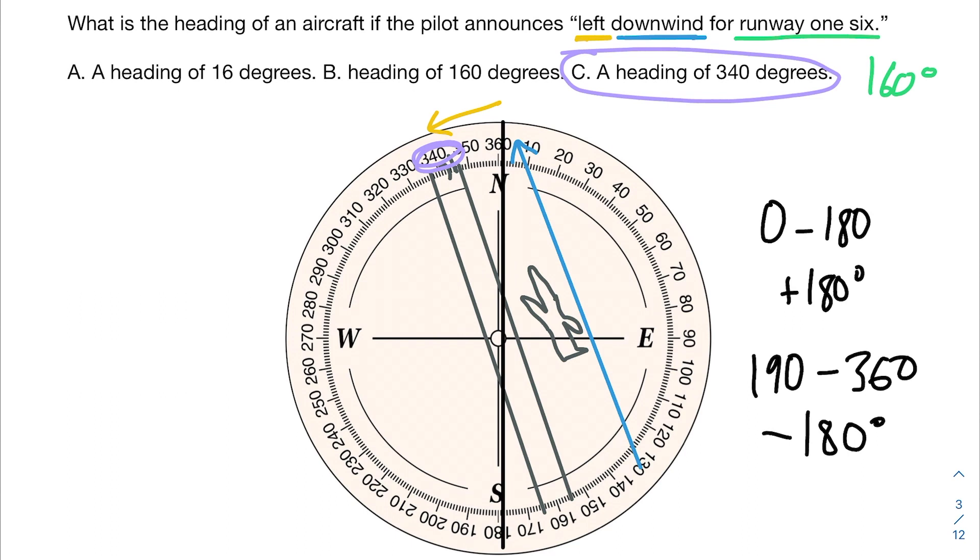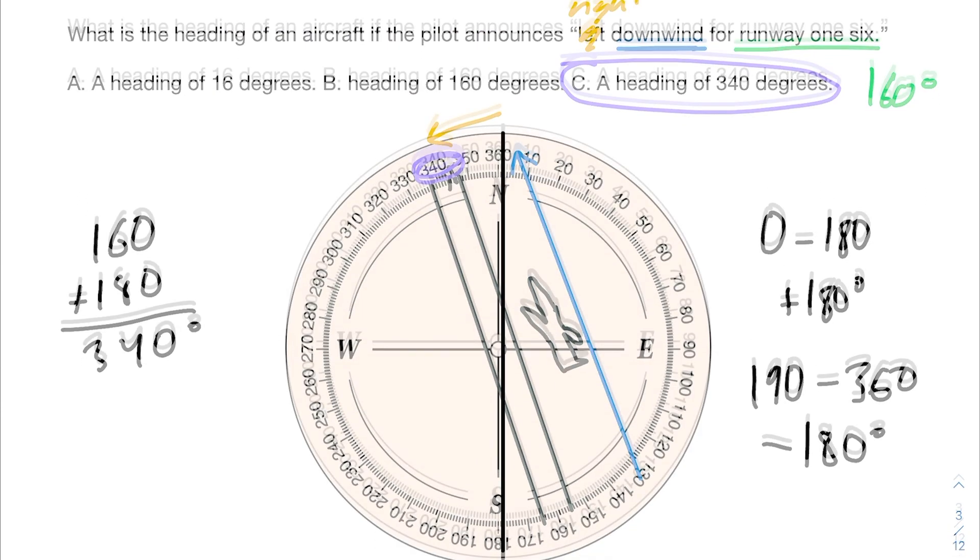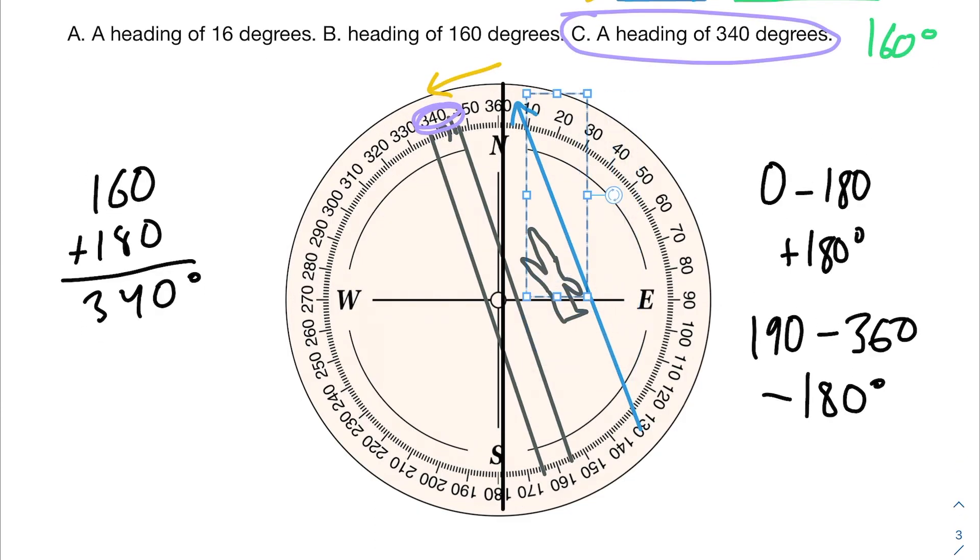And you can see that applies here because we're trying to land on runway 16. If we're downwind, we just add 180 degrees, we get 340. Downwind, we're headed 340. This would be true as well if this was right, because then you would just grab this and move it over here, and you would be turning right.